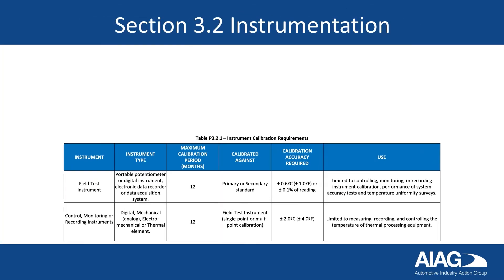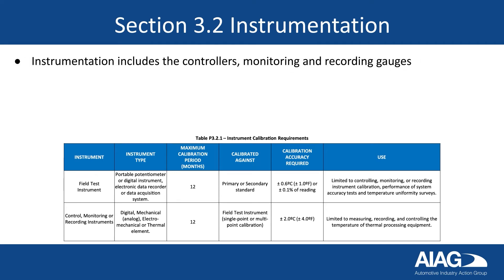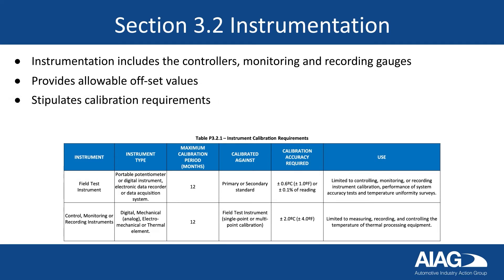Section 3.2 addresses instrumentation, which includes the controllers, monitoring, and recording gauges. It provides allowable offset values, stipulates calibration requirements, and defines reporting criteria. Refer to the table shown for an example.